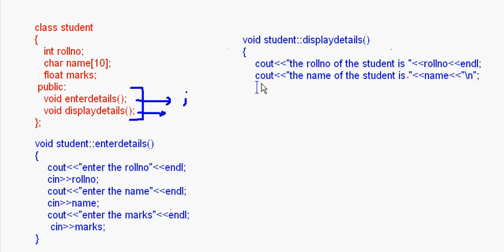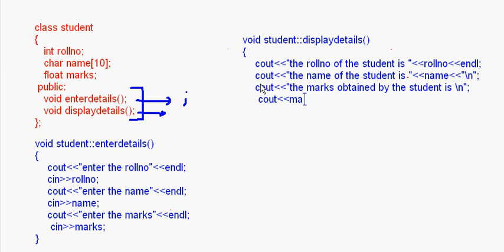To move to the next line you can either use a backslash n within double quotes, or use endl — which does not need to be in double quotes. Then cout << "The marks obtained by the student is" << marks, and close the method. This way we have written the student class with methods defined outside using the scope resolution operator.